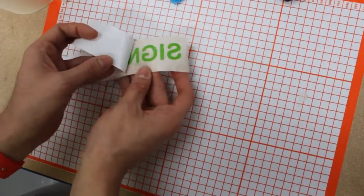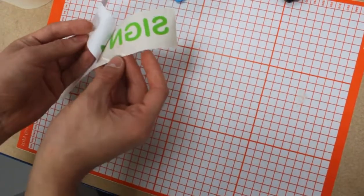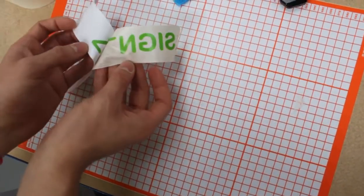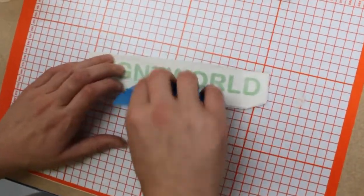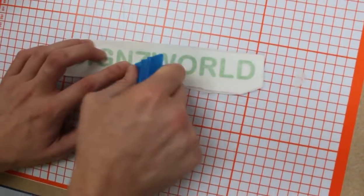Alright, so ideally the vinyl should stick to the application tape if you have something similar to this. Need to grab a squeegee and work those letters again.